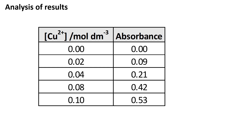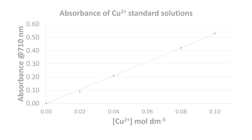Here are some example results for the absorbance of a series of copper 2+ standard solutions. As expected, a plot of concentration against absorbance gives a straight line graph through the origin.